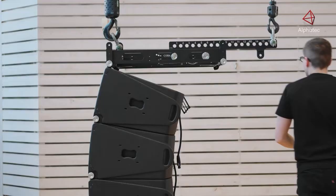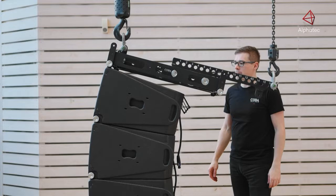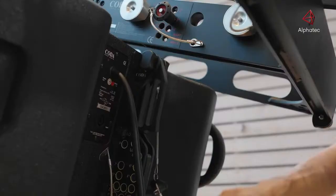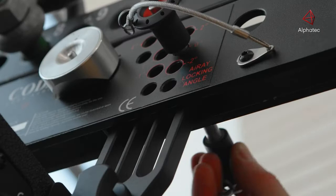Move around to the rear of the array and lower the frame all the way down onto the cabinet. Lift up, lower onto the spine, then insert the flying pin.